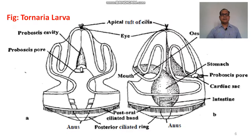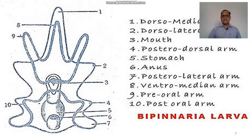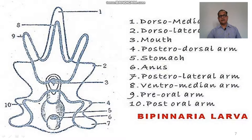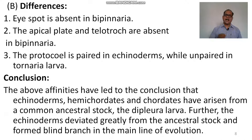This is the tornaria larva, which has the apical tuft of cilia, the mouth, the stomach — the largest part — and the anus, along with the post-oral ciliated band. This is the bipinnaria larva of starfish, showing the dorsal median arm, dorsal lateral arm, the mouth, stomach, anus, and various arms.